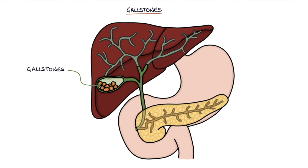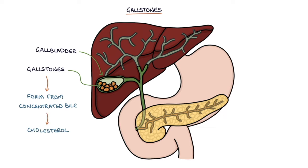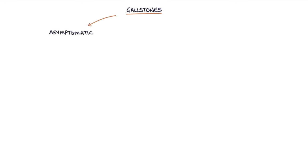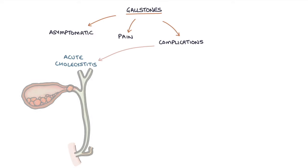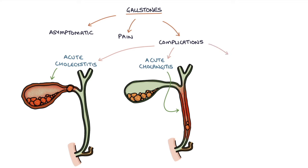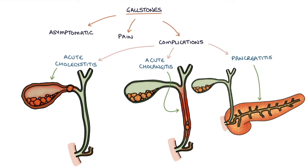Gallstones are small stones that form within the gallbladder. The stones form from concentrated bile in the bile duct, and most stones are made of cholesterol. Gallstones may be completely asymptomatic. They can also cause pain and lead to complications such as acute cholecystitis, acute cholangitis, and pancreatitis. Gallstones blocking the drainage of the pancreas — i.e., the pancreatic duct — result in pancreatitis.